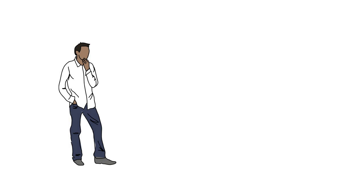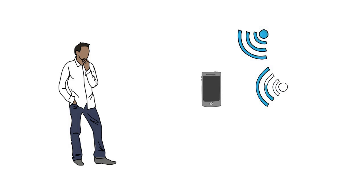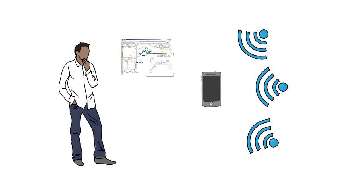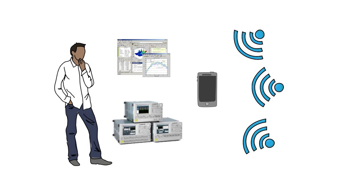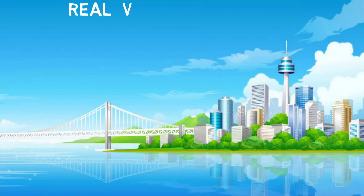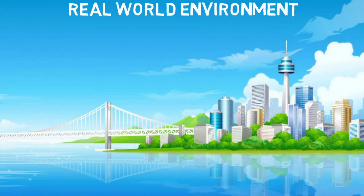This is Sam. Sam is an engineer who wants to optimize the performance of a positioning solution which uses power and delay from surrounding Wi-Fi access points to determine the position of the device. He uses typical tools like simulations and test equipment, but what Sam really needs to validate is how this solution will perform in a real-world environment.